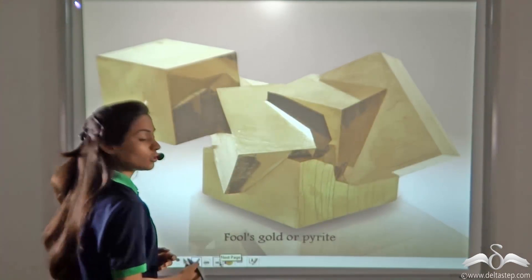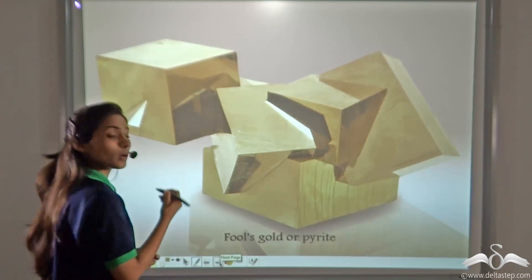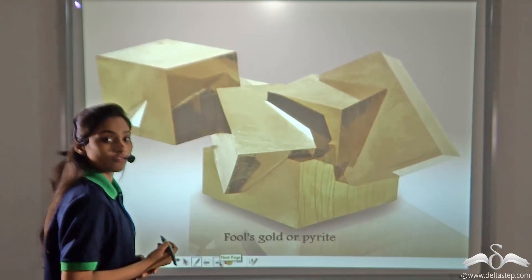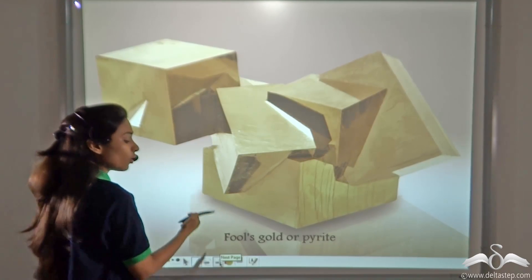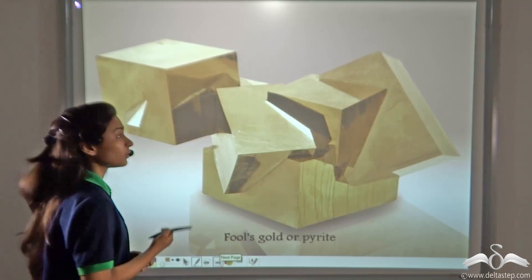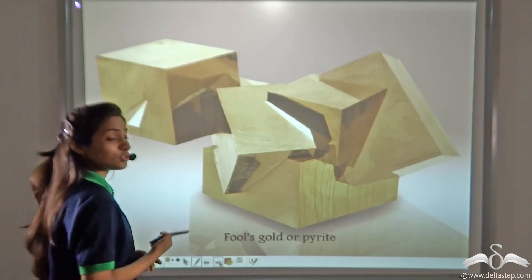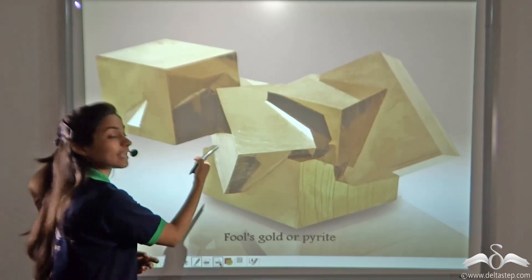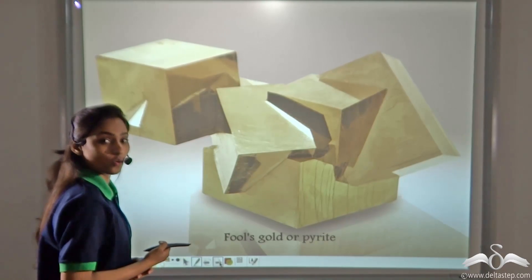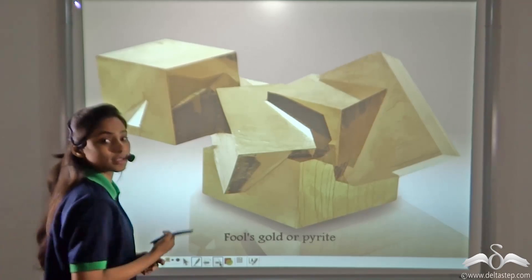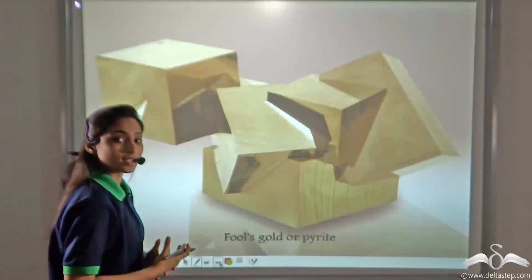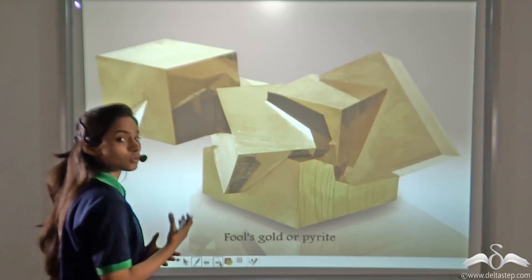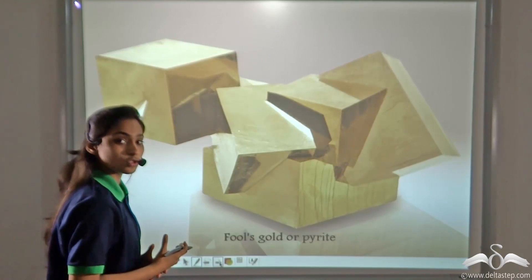Fool's gold, or pyrite, is also an example of a metallic mineral. It is called fool's gold because it has the same colour as gold and is also glossy like gold, so some people get fooled thinking it is gold.